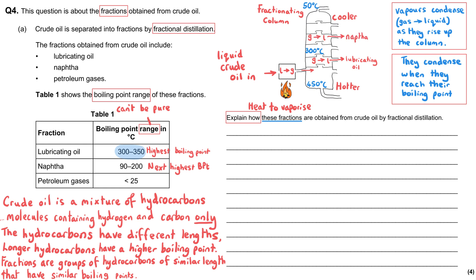The naphtha will condense next out of these three because its boiling point is the next lowest. And the petroleum gas will either condense at this level or possibly even not condense at all because it will have the lowest boiling point of all. And so the petroleum gases are actually unlikely to condense in this column.